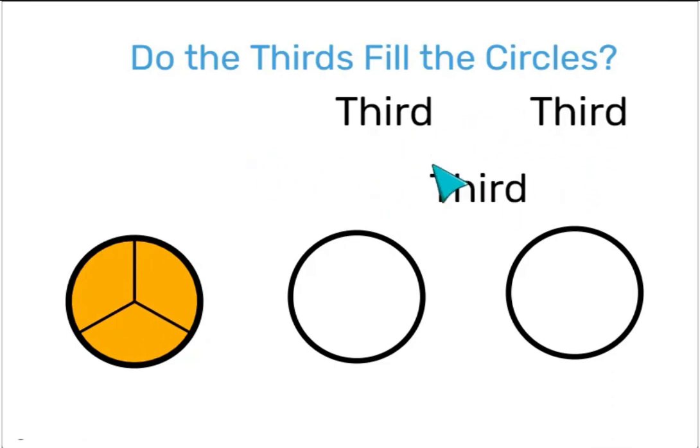And now I can see that I am not going to have enough to fill the remaining 2 circles. Thirds are smaller than halves, so I would need more pieces to fill the same amount of circles.